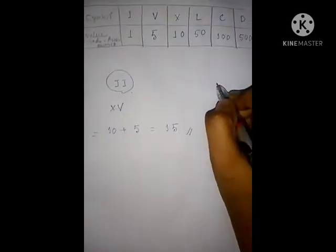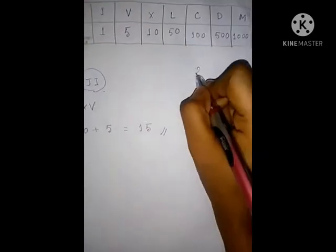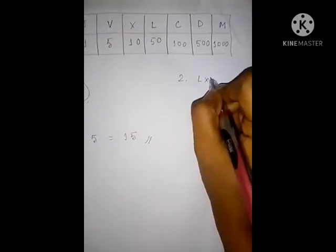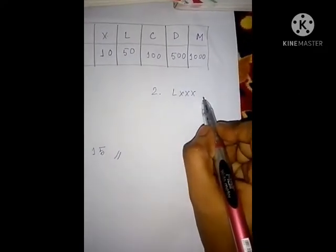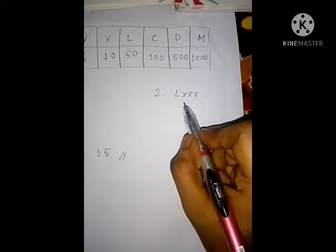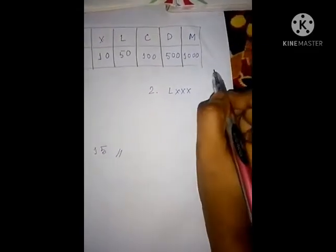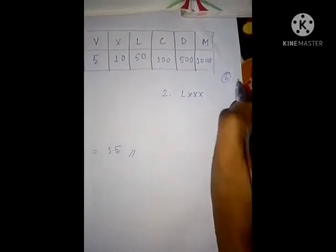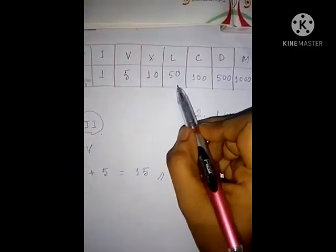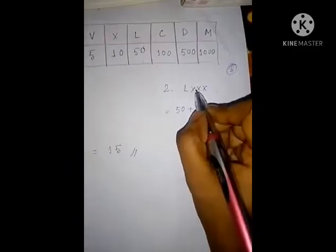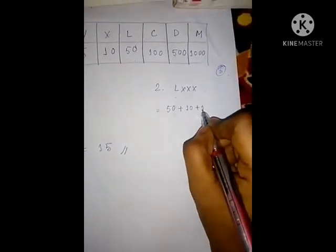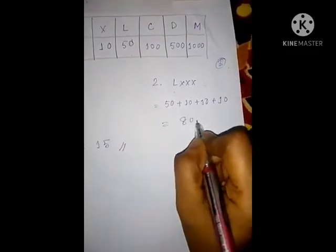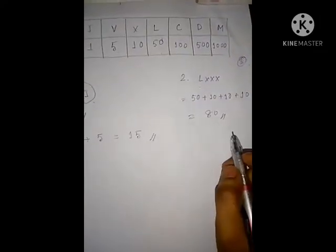Now see example 2: L followed by three X's (LXXX). We cannot put 4 X's because a symbol can be repeated a maximum of 3 times. So: L means 50, plus X means 10, plus X means 10, plus X means 10. The answer is 80.